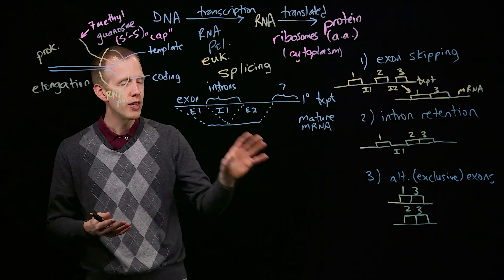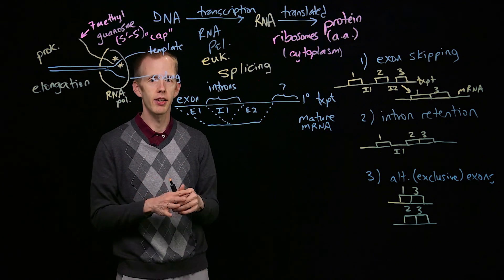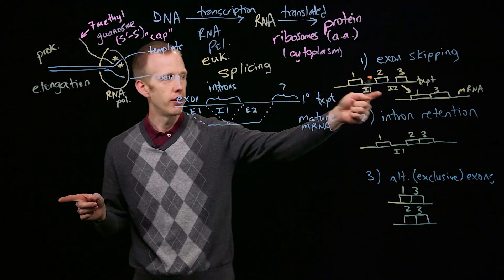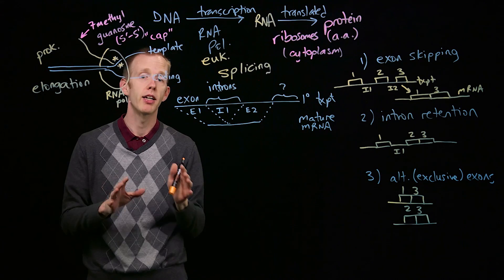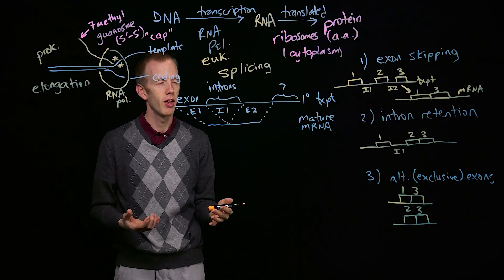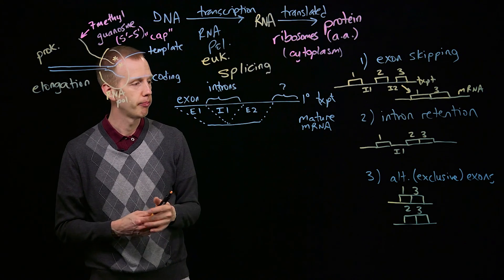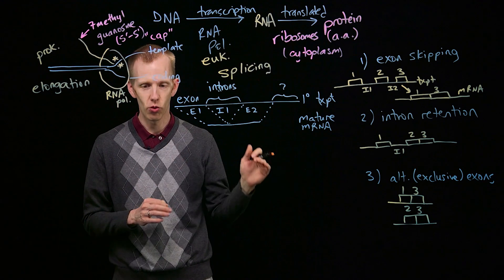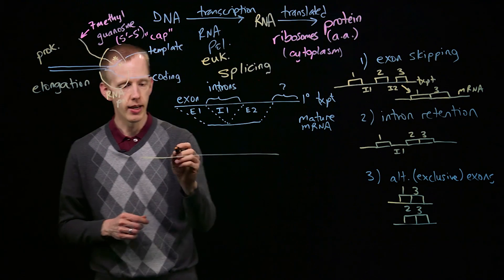So the good news and the reason that geneticists think that eukaryotes do splicing is because it lets you take one gene and produce multiple different types of proteins from the same gene. So it's a mechanism of generating diversity. On the other hand, yes, it could be mutagenic and the process can screw up. So it's really important that the cell get splicing right. And here's how a cell knows where an intron is located.